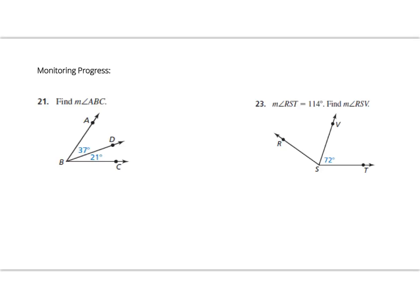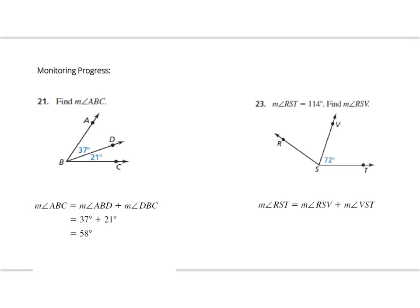Let's practice the angle addition postulate. Set up the statement with your three angles — the two smaller angles added together equal the bigger angle. Then substitute values: 37 plus 21, so the measure of angle ABC equals 58 degrees. For the second example, set up: the measure of angle RST equals the measure of angle RSV plus the measure of angle VST. Substitute what you know, use your algebra skills, and solve — the measure of angle RSV equals 42 degrees.